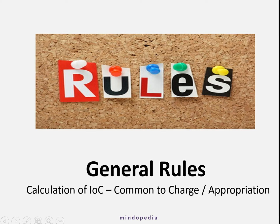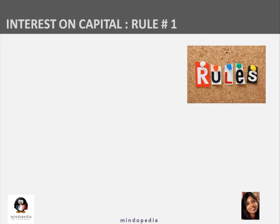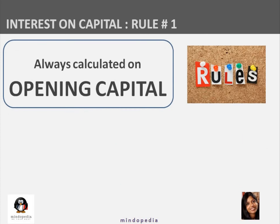Now we will discuss the general rules regarding the calculation of interest on capital. These rules are applicable equally whether we are calculating interest on capital as a charge or as an appropriation. Rule number one says that interest on capital is always calculated on opening capital — it is always the opening capital on which it is calculated.